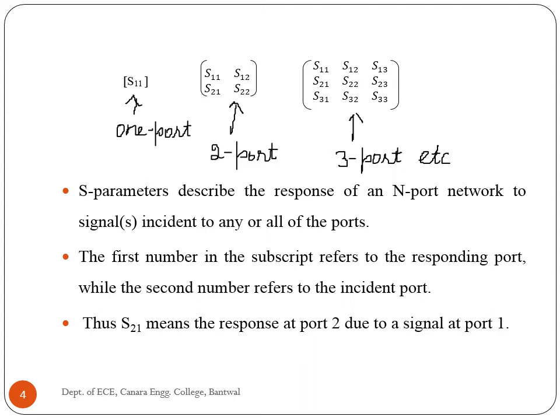S-Parameters describe the response of an N-port network to a signal incident to any or all of the ports. The first number in the subscript refers to the responding port while the second number refers to the incident port. Thus S21 means the response at port 2 due to a signal at port 1.